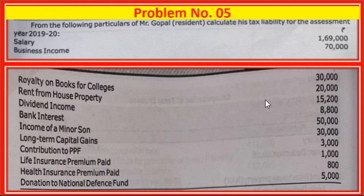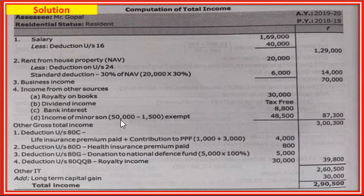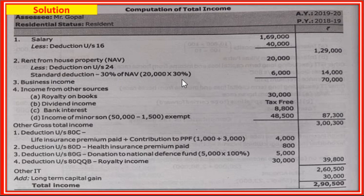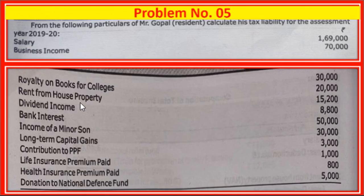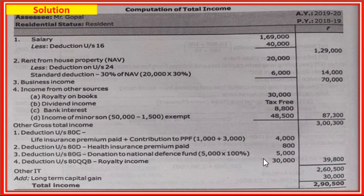Next, income from house property: rent from house property 20,000. Less deduction under section 24(1), standard deduction at 30 percent of net annual value - assumed net annual value, 30 percent equals 6,000. Balance 14,000. Third head of income: business income. Taxable income from business: 70,000.